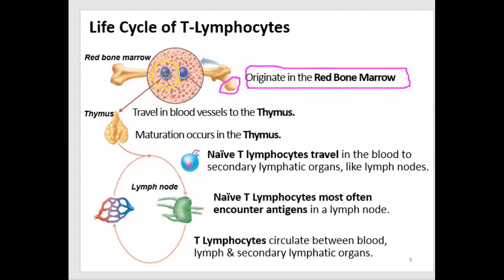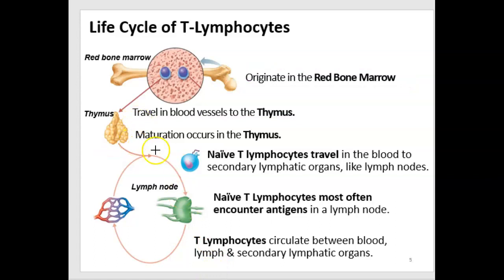The T lymphocyte migrates out of the bone marrow to travel in blood vessels to the thymus. The thymus gland decreases in humans with age, but starts out pretty large during development to facilitate the maturation of many different types of T lymphocytes. Maturation of T lymphocytes occurs in the thymus — that's why they're named T cells.